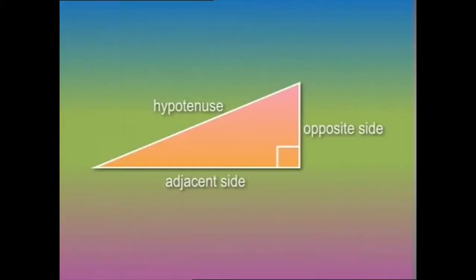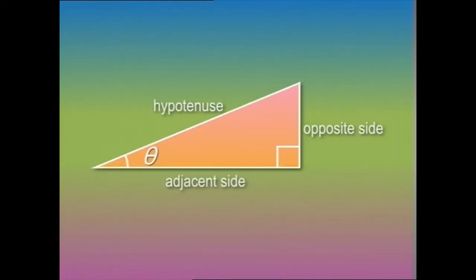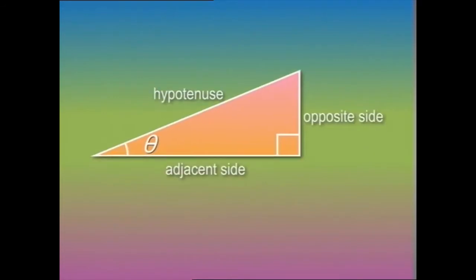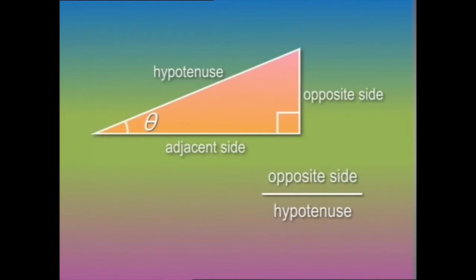In a right angle triangle, let's suppose this acute angle is theta. This side is then the opposite side of theta, this side is the adjacent side of theta, and this is the hypotenuse. For these three sides, when we use any two for comparison we'll obtain a trigonometric ratio. For instance, comparing the opposite side with the hypotenuse gives us one of the trigonometric ratios.